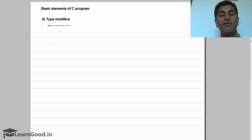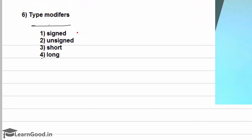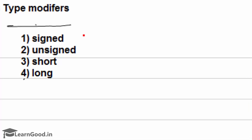So if you want to modify the structure of the data type, that can be done through these type modifiers. There are probably 4 type modifiers available in C. So first one is signed, second one is unsigned, then short and long.